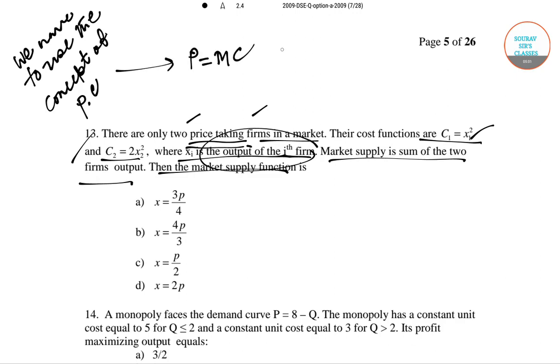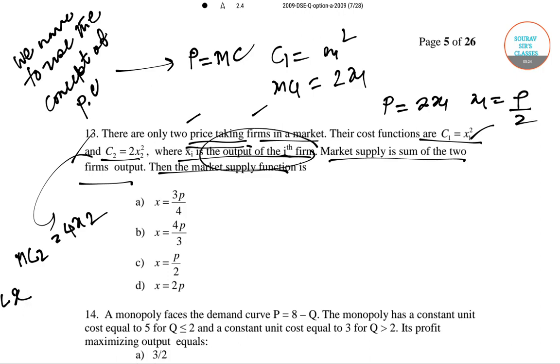Now we can easily calculate C1 equals X1 squared, so MC1 equals 2X1. Similarly MC2 equals 4X2. So we can equate individually. First P equals 2X1, so X1 equals P by 2. For the second, 4X2 equals P, so X2 equals P by 4.